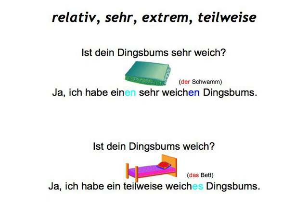So if I suspect that your object is a sponge and you just said that it is soft, I might next ask: 'Ist dein Dingsbums sehr weich?' And you would answer: 'Ja, ich habe einen sehr weichen Dingsbums.' You would say 'einen weichen' because sponge is masculine — der Schwamm. Or if I asked 'Ist dein Dingsbums weich?' and your object is a bed, you would answer: 'Ja, ich habe ein teilweise weiches Dingsbums.' In this case, the adjective ending -weiches is referring to the neuter das Bett.